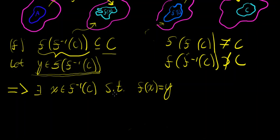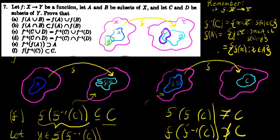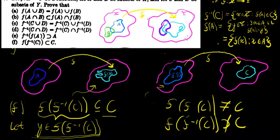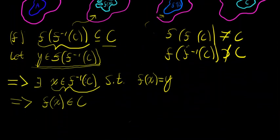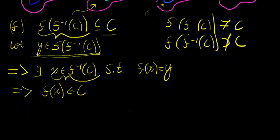So if x is in the inverse image of C, let's think about what that means. If x is in the inverse image of C under f, this implies that f(x) is in C. This hinges on the definition of what it means to be in the inverse image of a set C. If I'm in the inverse image of C under f, then I'm in the set of all x in X such that my image under f is in C — so x is in the set of elements mapped by f to C, meaning f(x) is in C.